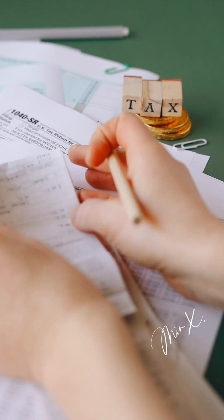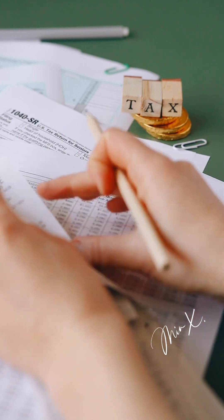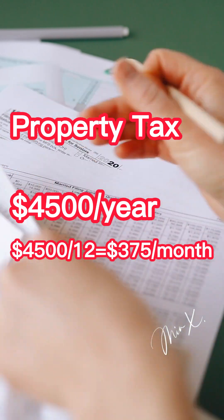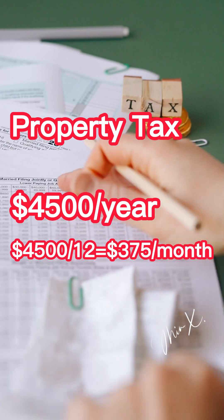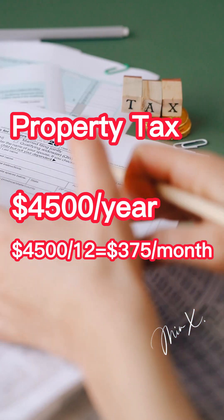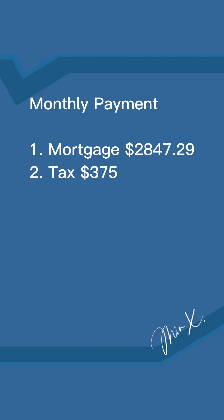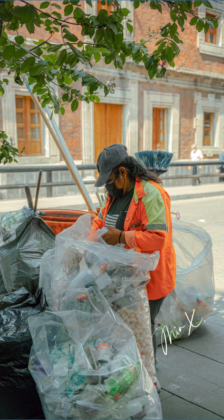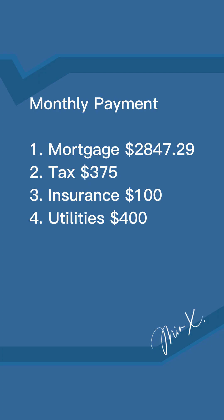It's also essential to account for additional expenses such as property taxes, which tend to hover around $4,500 annually, equating to a monthly expense of roughly $375. You should budget approximately $100 per month for home insurance. Utilities — encompassing water, electricity, natural gas, garbage collection, and sewer services — total an estimated monthly expense of $400.